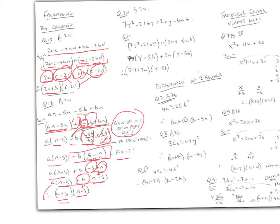For 7y²-21by+2ay-6ab: bracket the first two and last two terms. The highest common factor of the first pair is 7y, giving 7y(y-3b). The highest common factor of the second pair is 2a, giving 2a(y-3b). The standout term is (y-3b), so the answer is (y-3b)(7y+2a).